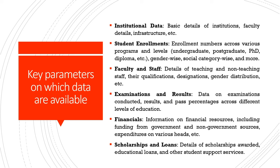Student enrollment data is available for undergraduates, postgraduates, PhDs, and diploma programs — this is the data source from which we calculate the proportion of youth enrolled in higher education institutions, with gender-wise and social-category-wise distinctions. Faculty and staff information covers details of teaching and non-teaching staff, their qualifications, designations, and gender-based distribution of faculty.